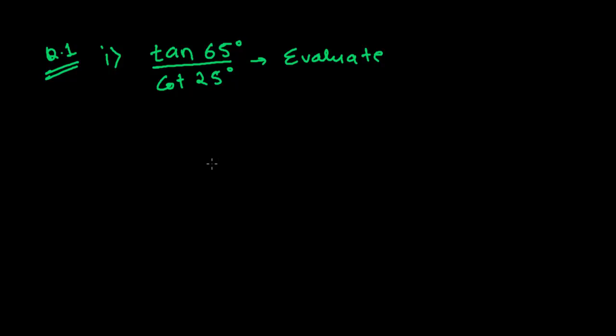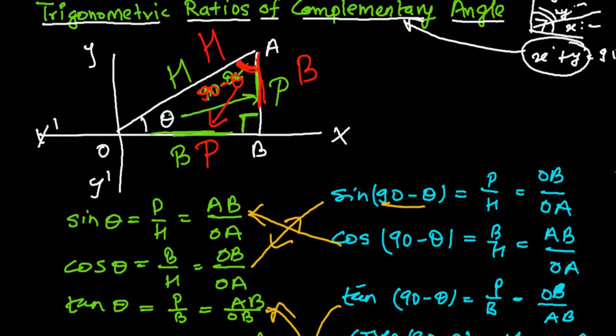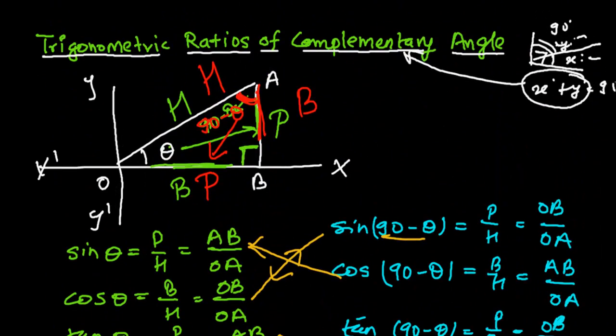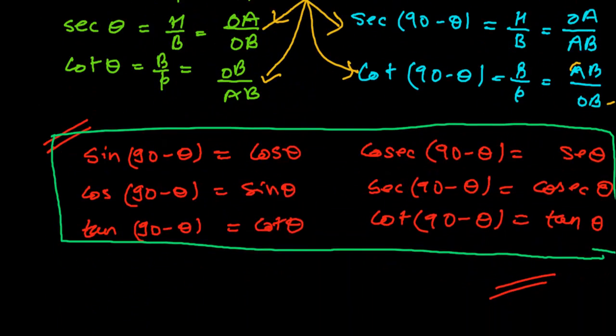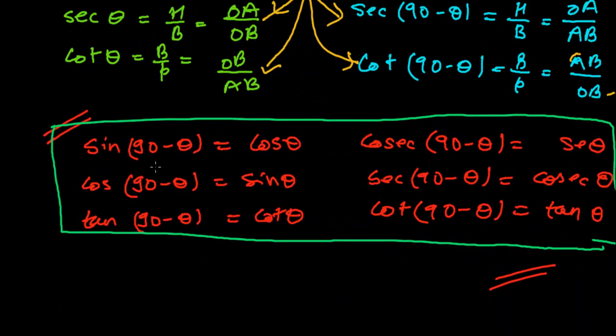Hi friends, recently we learned the trigonometric ratios of complementary angles, right? And we finally got these conclusions. These are the conclusions: sine(90° - θ) = cos θ, cos(90° - θ) = sine θ.